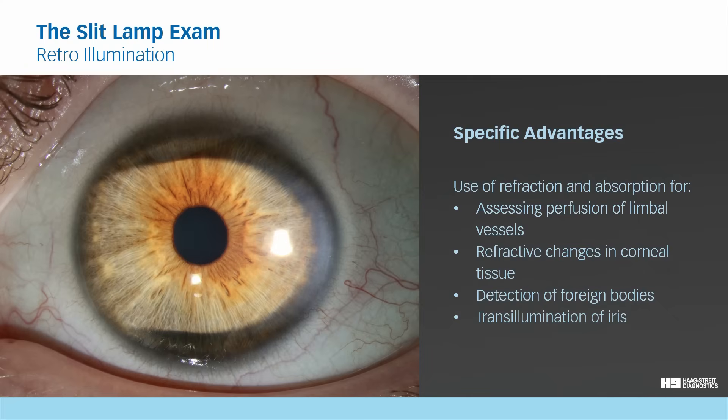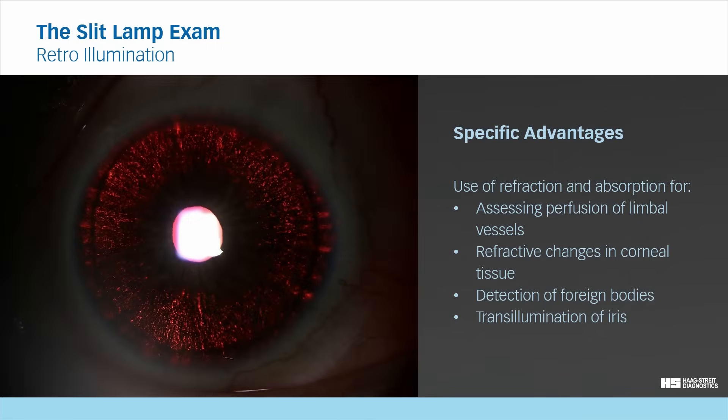In direct illumination, the iris appears to be normal. However, when the light is directed through the pupil and reflected from the retina to illuminate the iris from behind, it reveals pigmentary loss.